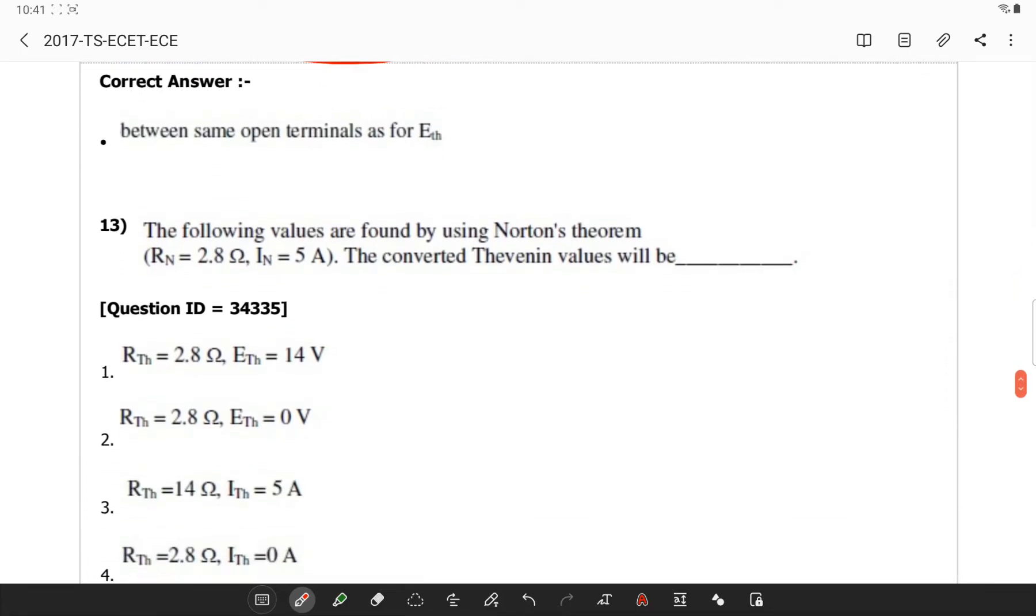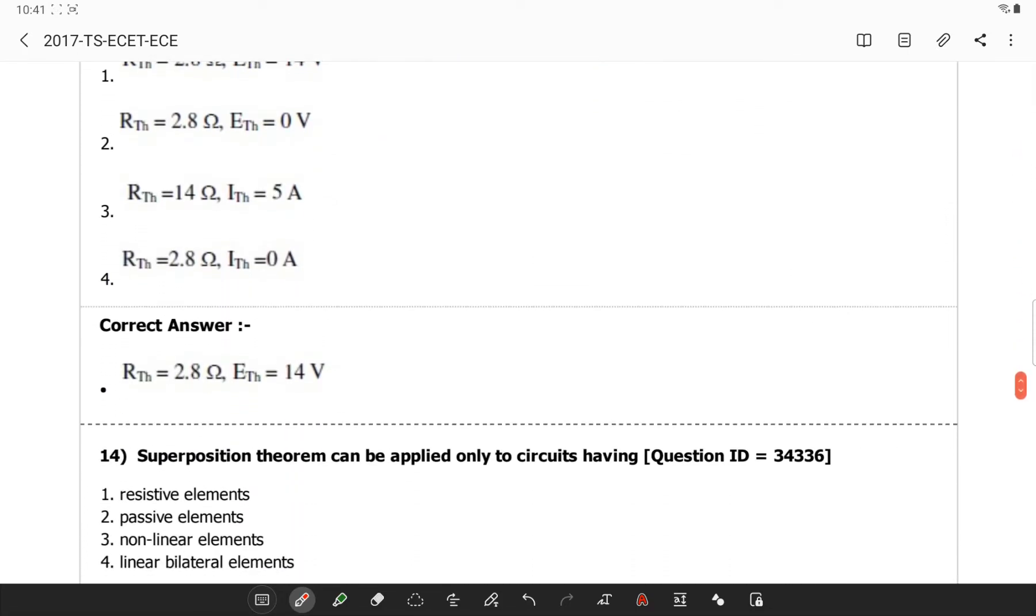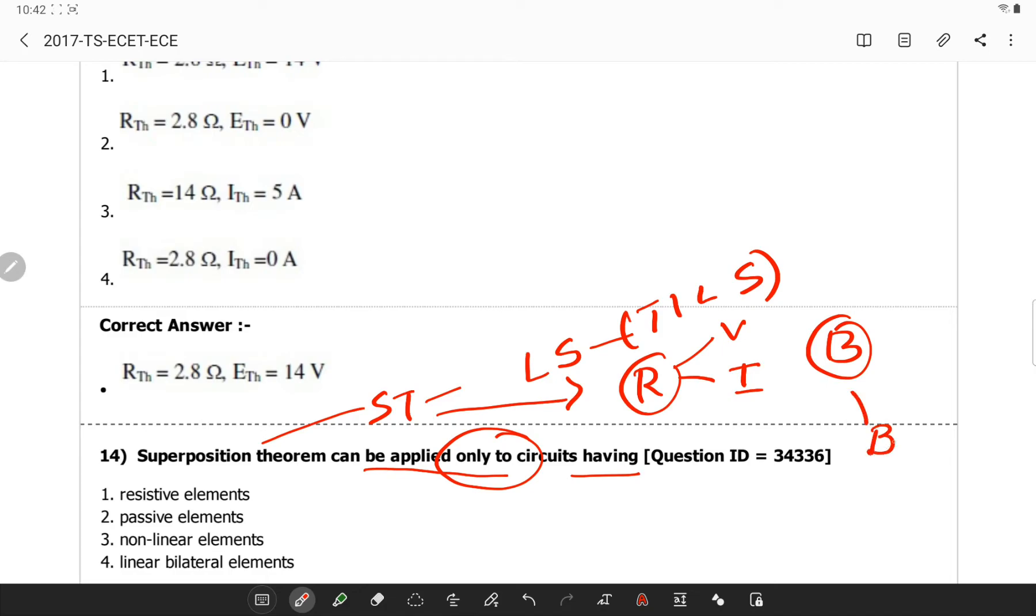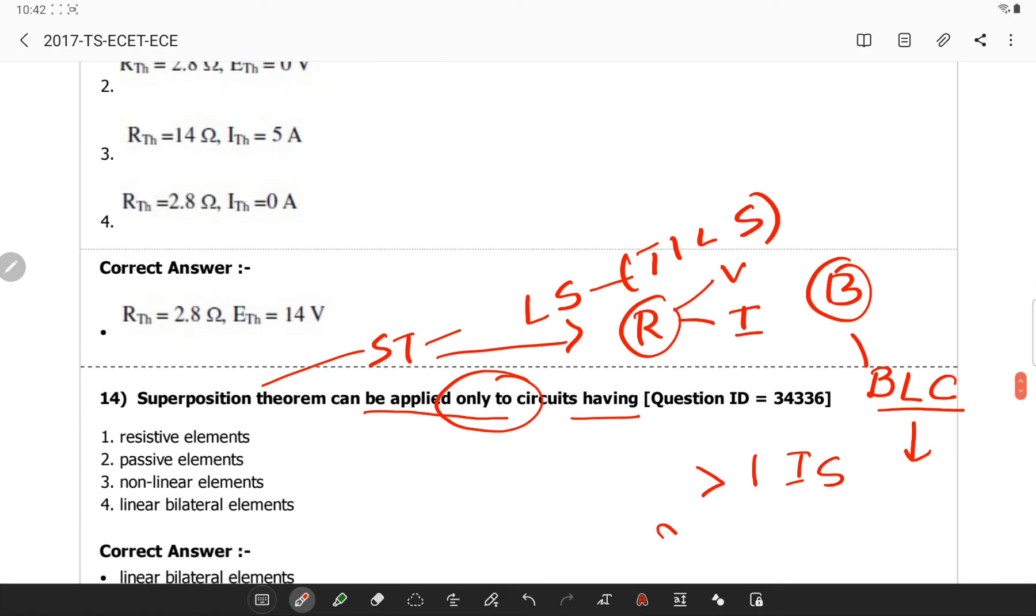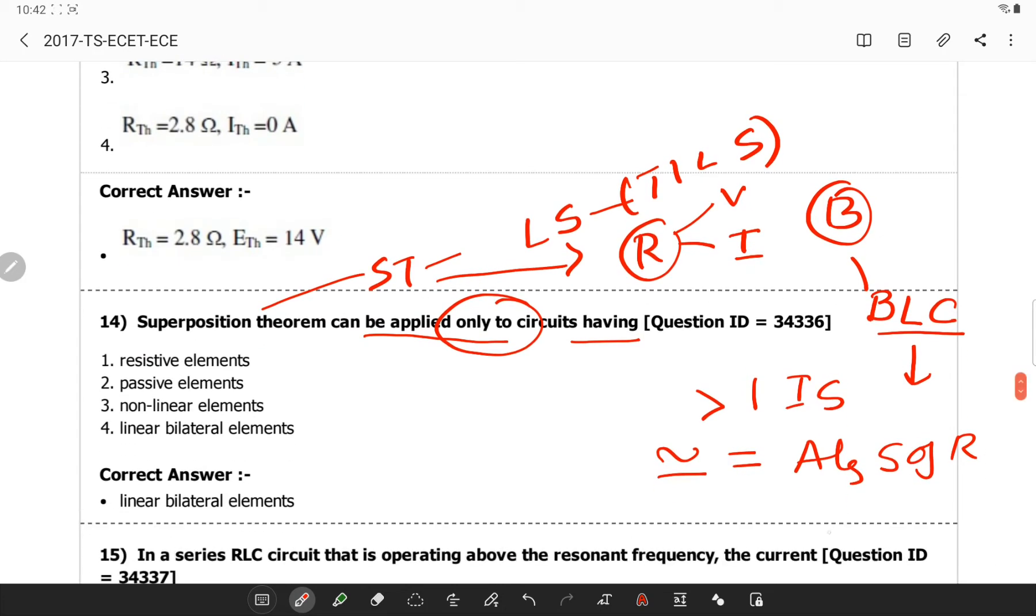Superposition Theorem can be applied only to circuits having basically Superposition Theorem states that it is only for linear system and including the subcategory of time-invariant linear systems in which the response, it can be voltage or current, in any branch of a bilateral linear circuit having more than one independent source will be equal to the algebraic sum of responses caused by each independent source. So if you observe, it is for only linear and bilateral elements.